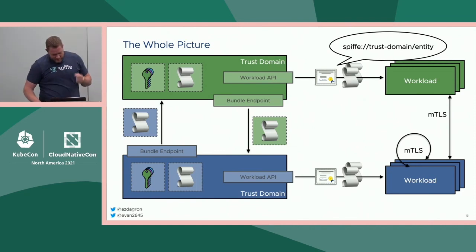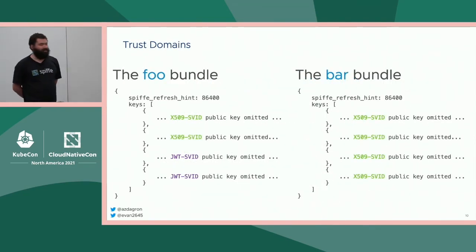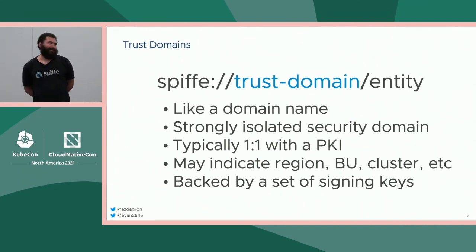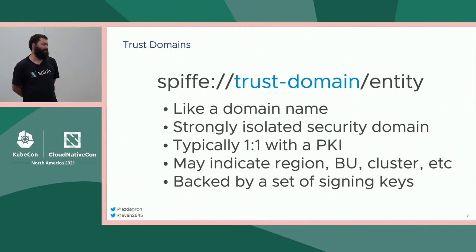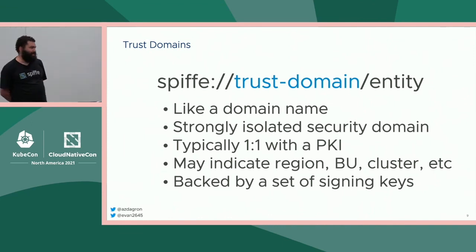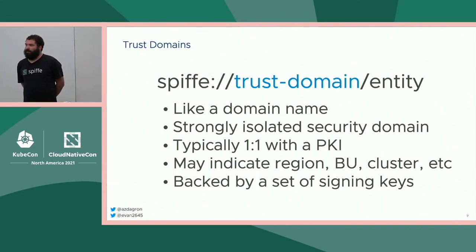Strong security isolation can be summed up this way: any time you have a security domain where you want very strong isolation between two environments, you usually take two trust domains. A really common example is staging and production — you don't want someone compromising staging to own the PKI used in production. You'll also find regulatory and region-based reasons. It depends on your deployment and what your needs are, similar to the naming discussion.